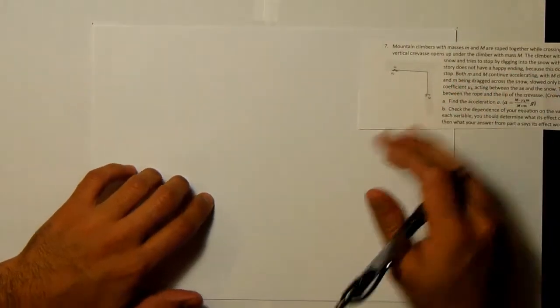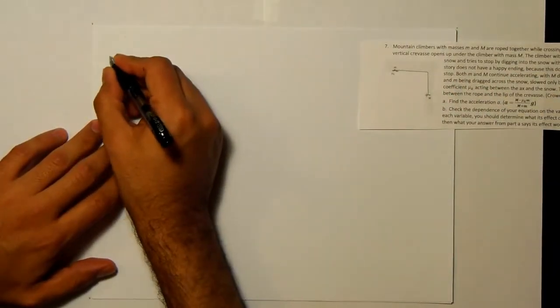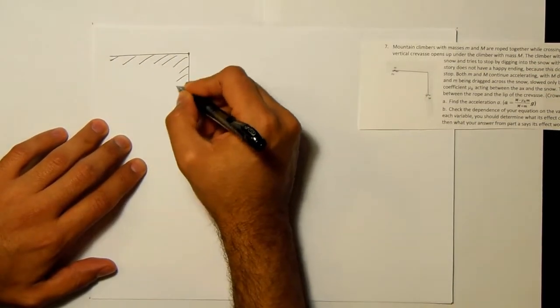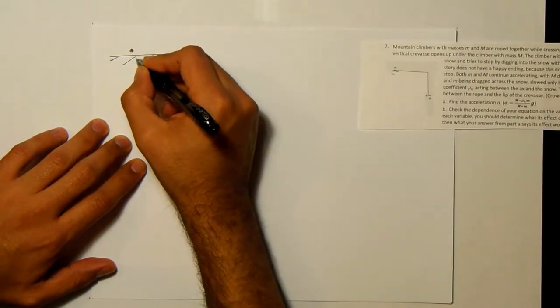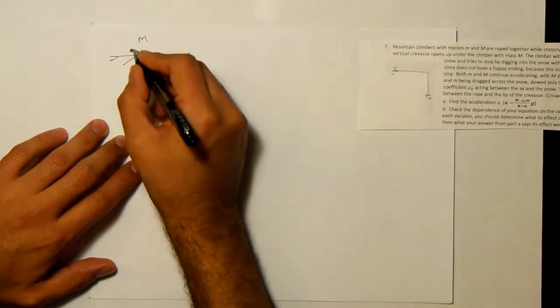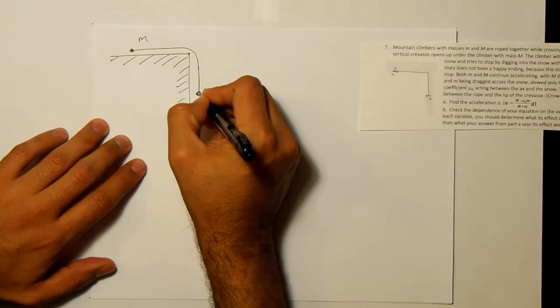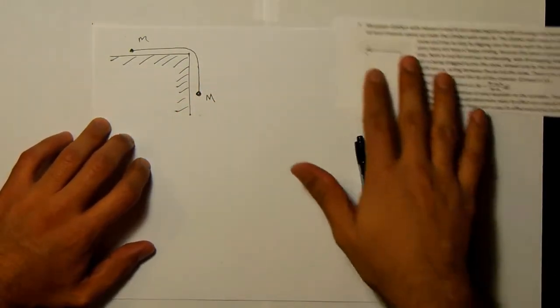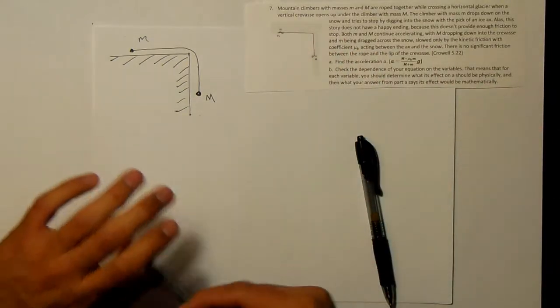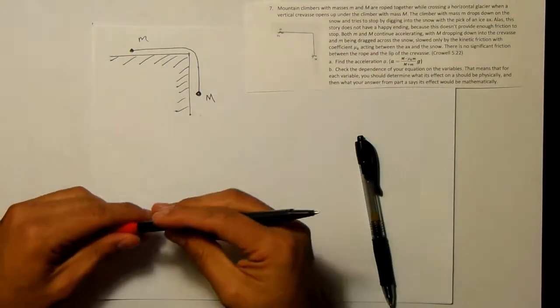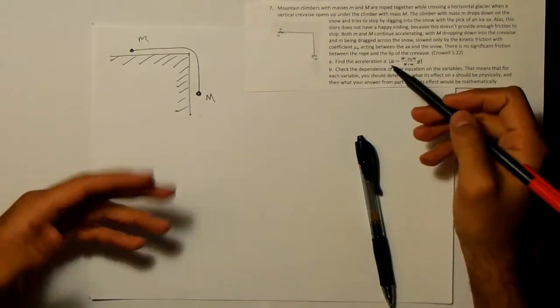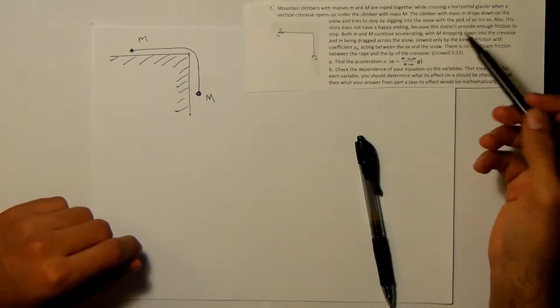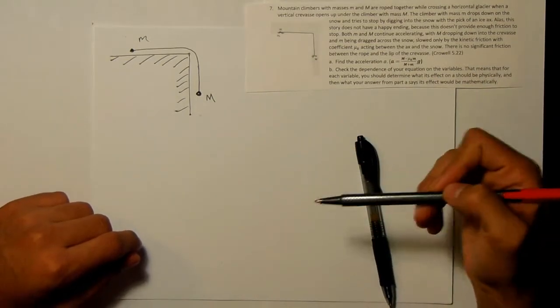So I'm gonna draw first a diagram. So I might have drawn it too close to the top of the page. Here's little m and there's a rope that goes over to big M. And I'm going to start by looking at all the forces on both of these guys because since we were looking for the acceleration we're probably going to use Newton's second law F equals ma in order to connect from the forces to the accelerations.